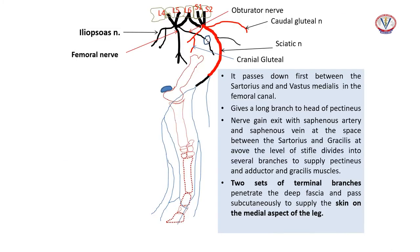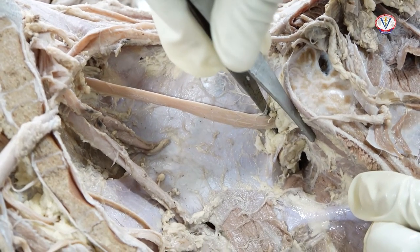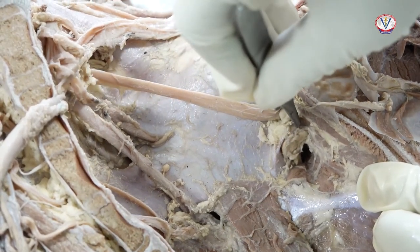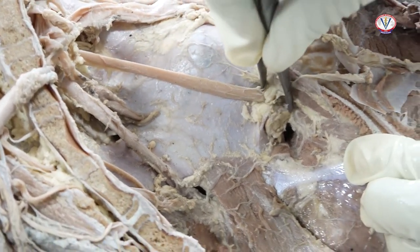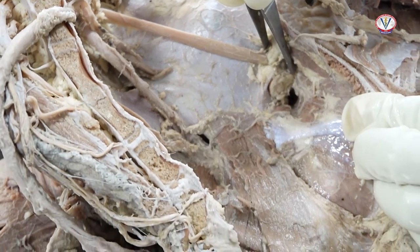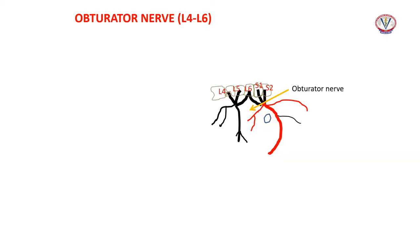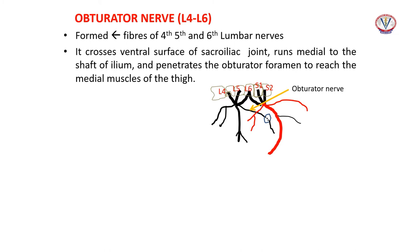The saphenous nerve passes through the femoral canal and gives a long branch to the head of pectineus, adductor, and gracilis muscles. The obturator nerve is formed from fibers of the fourth, fifth, and sixth lumbar nerves. It crosses the ventral surface of the sacroiliac joint, runs medial to the shaft of the ilium, and penetrates the obturator foramen to reach the medial muscles of the thigh. The obturator nerve is vulnerable as it lies against the bone.